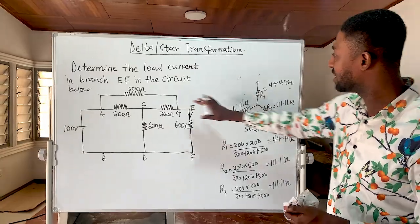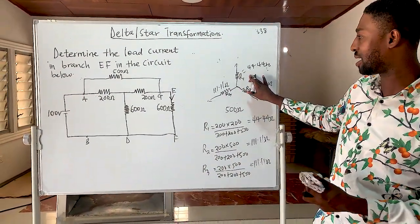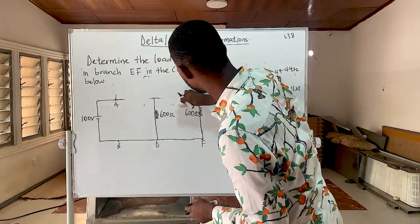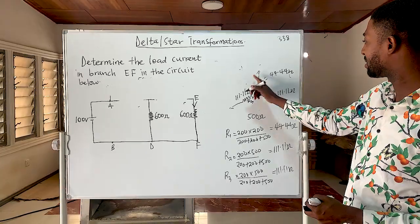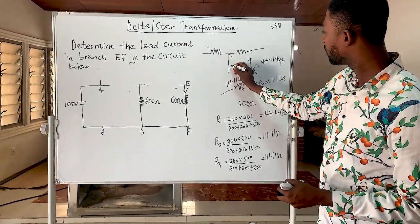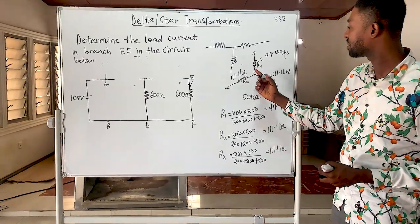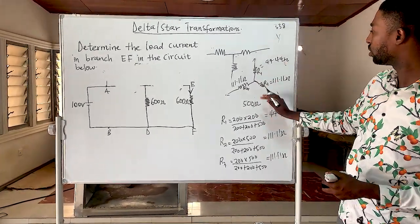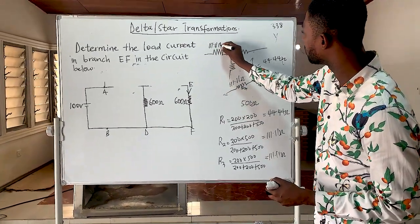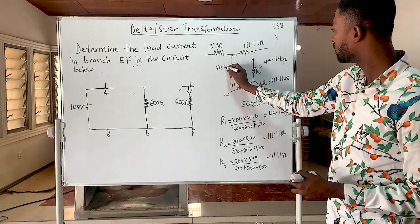Instead of the delta, let's bring in the star here — take the delta out and replace it with the star. Now we can use this part of the circuit. Remember, a star can take either a Y or T shape, so the star can be drawn with 111.11 ohms, 111.11 ohms, and 44.44 ohms.